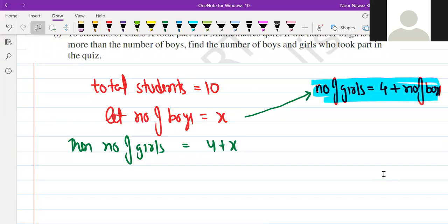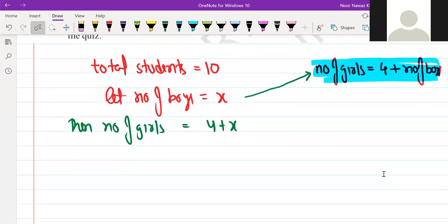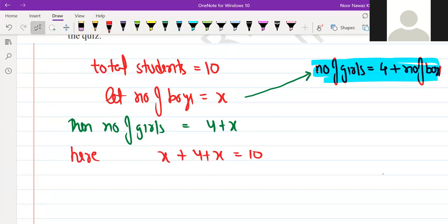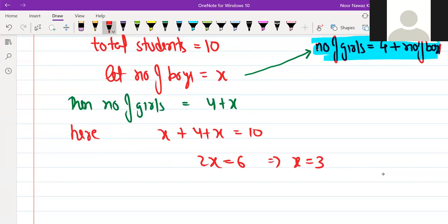How many total students? 10. So you write x plus 4 plus x is 10. So all the steps are gone. 2x is 6, x is 3. What is my boys? Boys is 3, and girls is 4 plus 3.